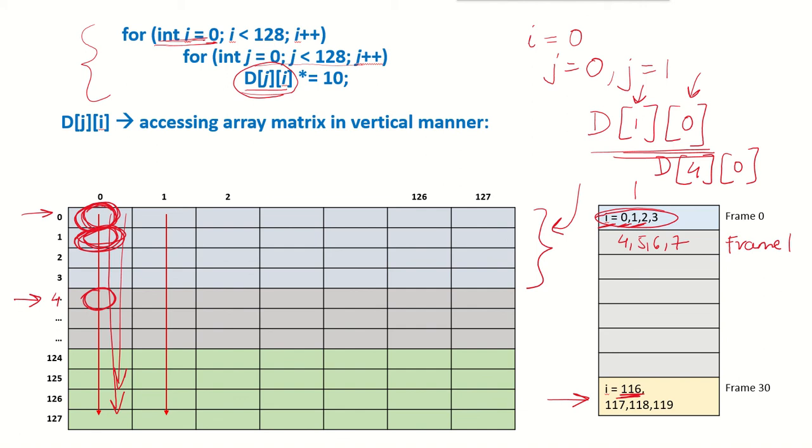Now when 120 comes all the frames, the 30 frames are full. So we have to now replace a frame and the least recently used frame will be replaced.